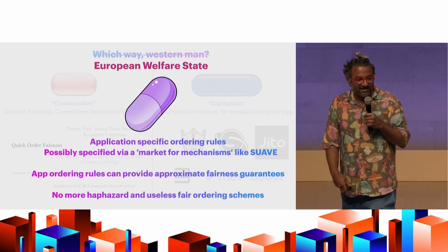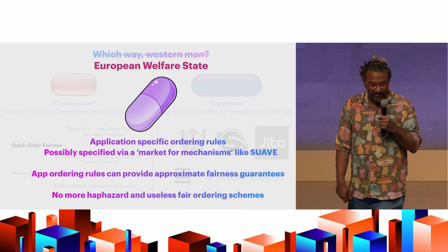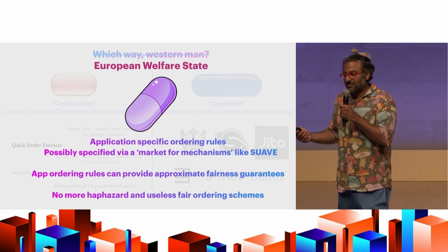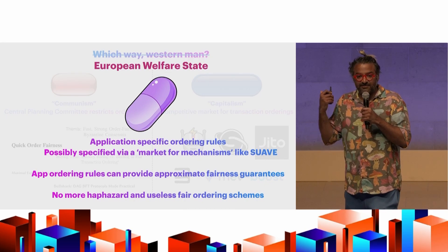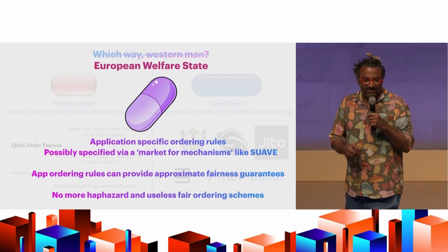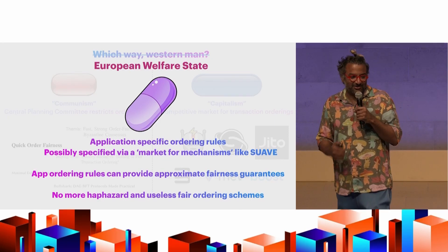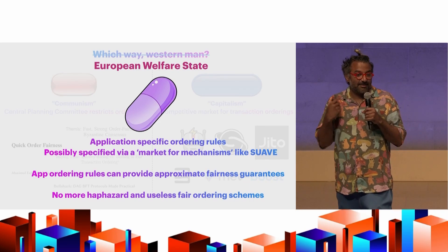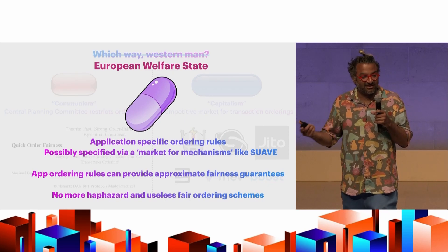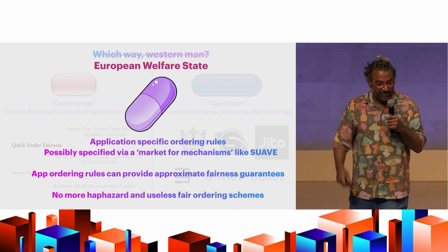So what, what this sort of suggests is the communist version of the world, the fair ordering type of stuff, things that are sequencing rules, doesn't, you know, is always going to preference certain applications over other applications. We always talk about MEV as being sophisticated users taking advantage of unsophisticated users. I would posit that the communist ordering world is sophisticated application developers taking advantage of unsophisticated application developers. All you're doing is changing who the person who's inuring the penalty is because the application developer is defining the payoff function. And if they don't understand how all this works, then they may have defined one that's extremely unfair on purpose.